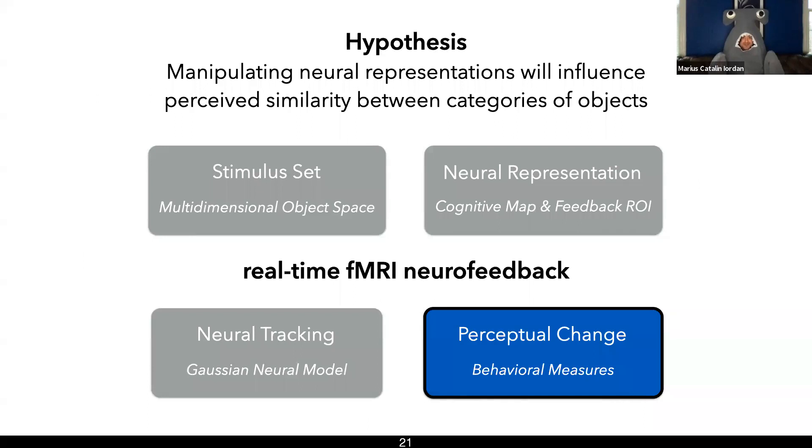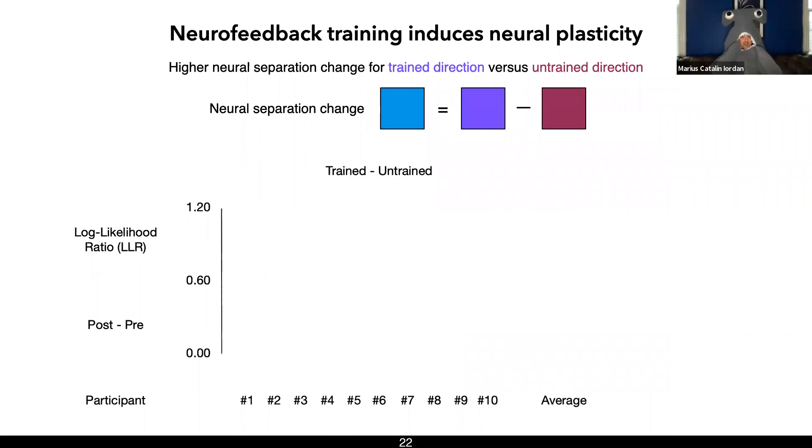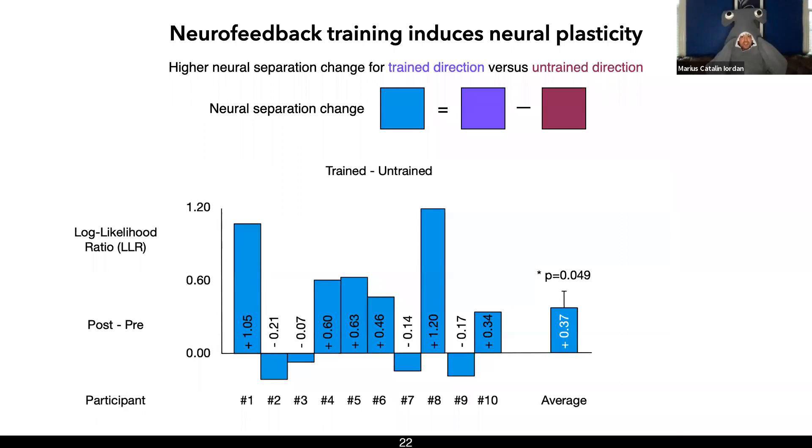So now let's see what we made participants do. First, we measured whether our neurofeedback training procedure was successful in changing the way the shapes are grouped in the brain. So we looked at the model log likelihood ratio, which is a measure of category separation. A positive number on this graph means that we achieved our goal of higher neural separation for the trained direction versus the untrained direction. And we see that for the majority of our participants, our procedure changed the way their brain represents the shapes they were looking at, and we had a relatively strong effect across our entire cohort.